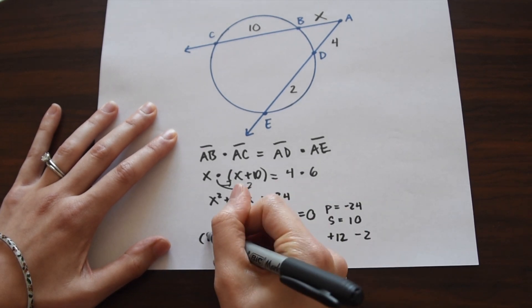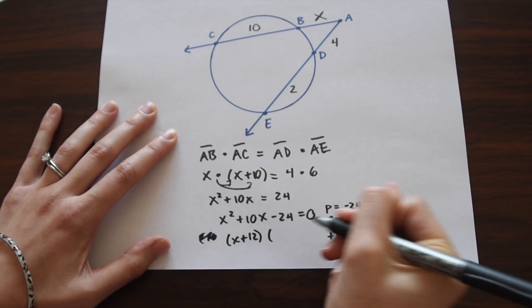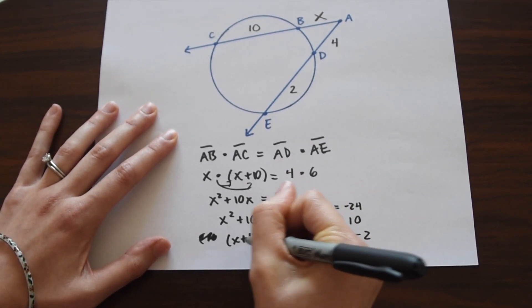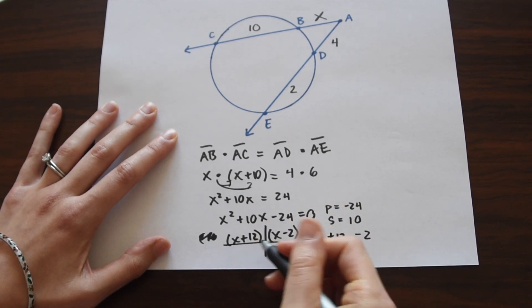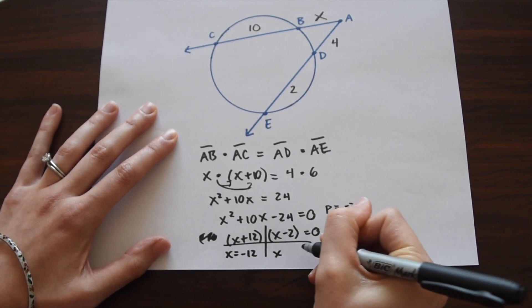So now let's rewrite our equation. We have X plus 12 times X minus 2 equals 0. And now we just solve for X. X plus 12 equals 0, this is going to give us X equals negative 12. And then X minus 2 is going to give us X equals 2.